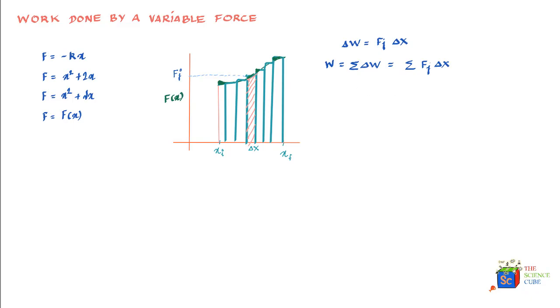as the limit of Δx tends to 0—we write it in this fashion: lim(Δx→0) Σ Fj·Δx actually equals ∫ F(x)dx as x changes from xi to xf, and this is the work done. In formula terms, you can write that the work done by a variable force is equal to the integral of that function